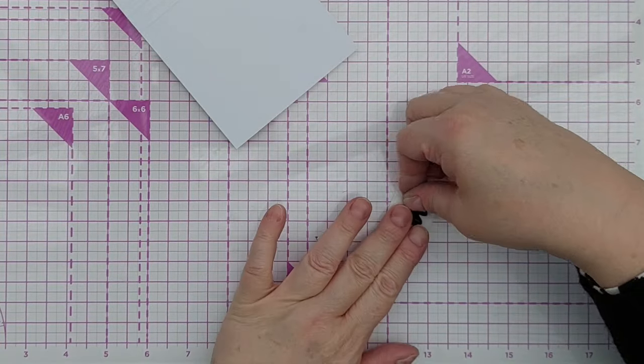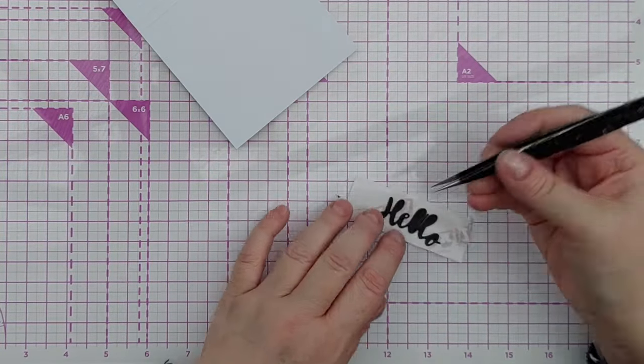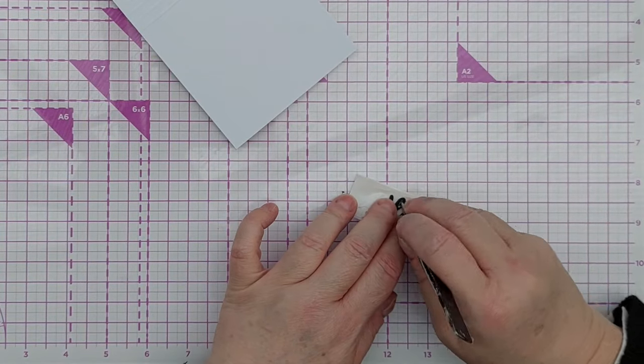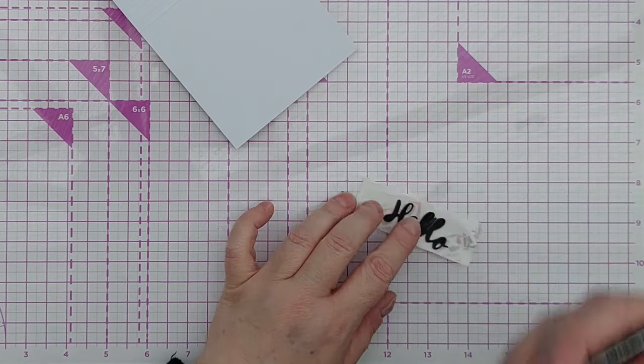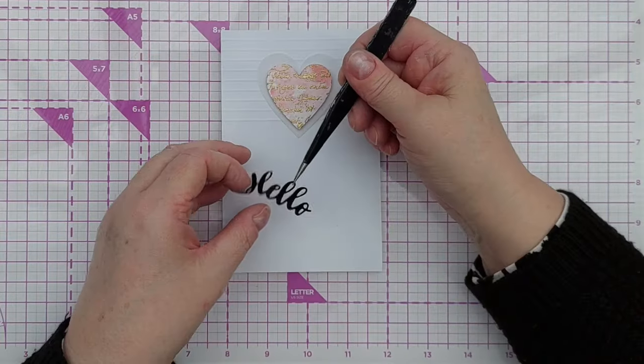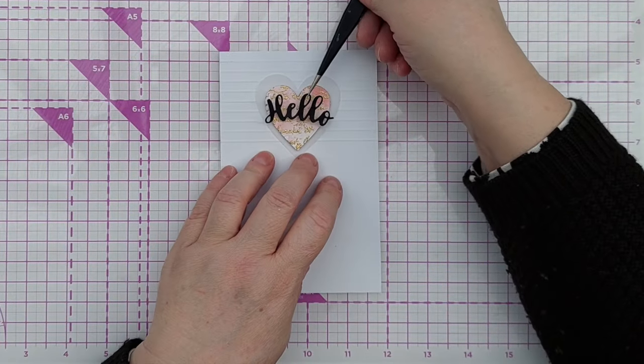I could use my tweezers to pull out all the little bits in the loops of the letters. Once that was done, I was able to stick it on my card front and layered it on top of my heart.